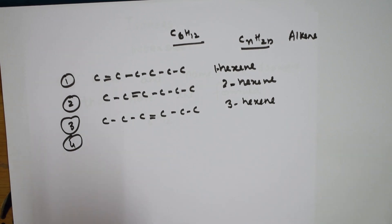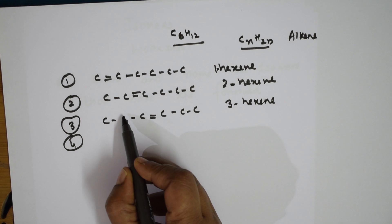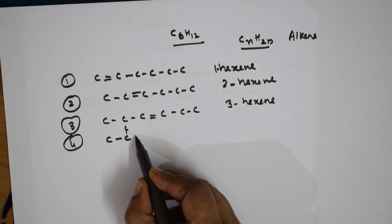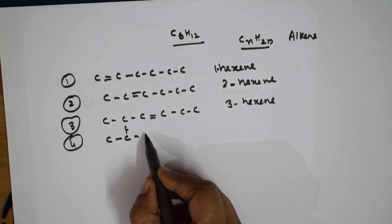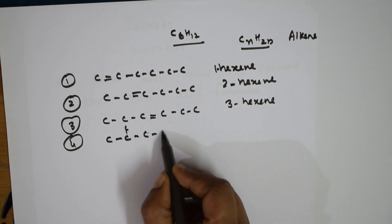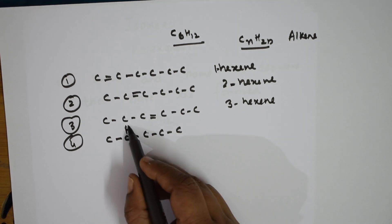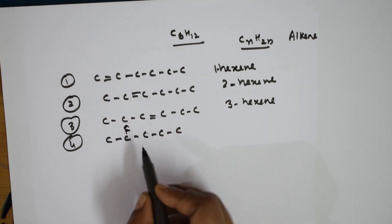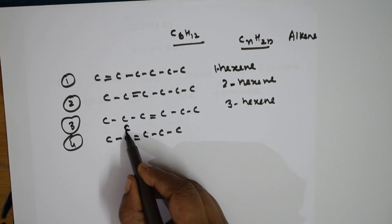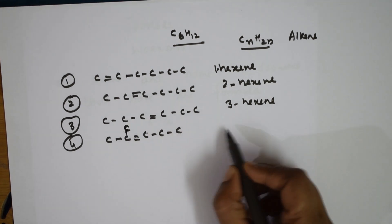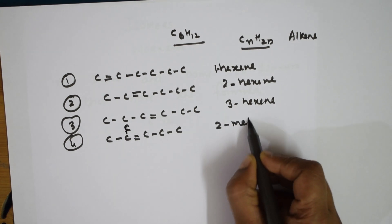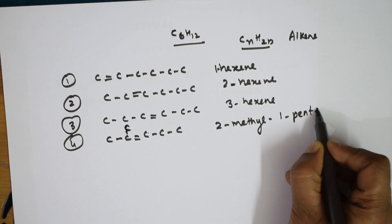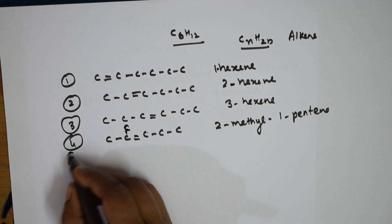Now shift the methyl group here. When you shift the methyl group, it looks like this — one more C, one more C. Don't forget about the double bond; the double bond was initially here so you can place it here. Name it: this is 2-methyl-1-pentene.